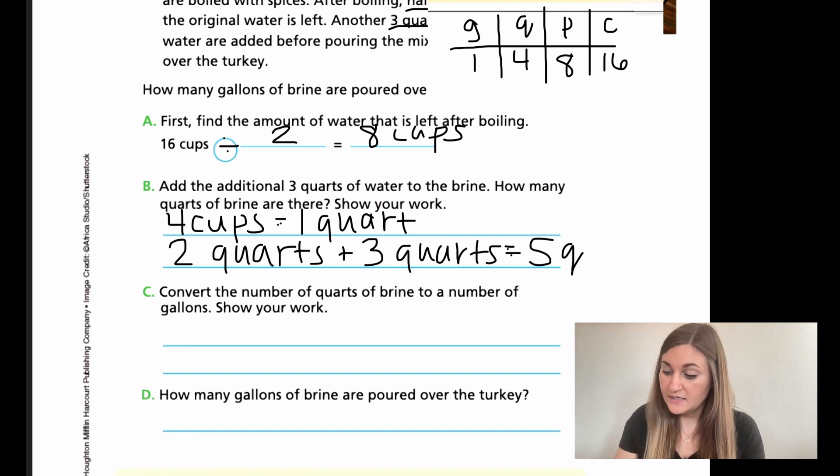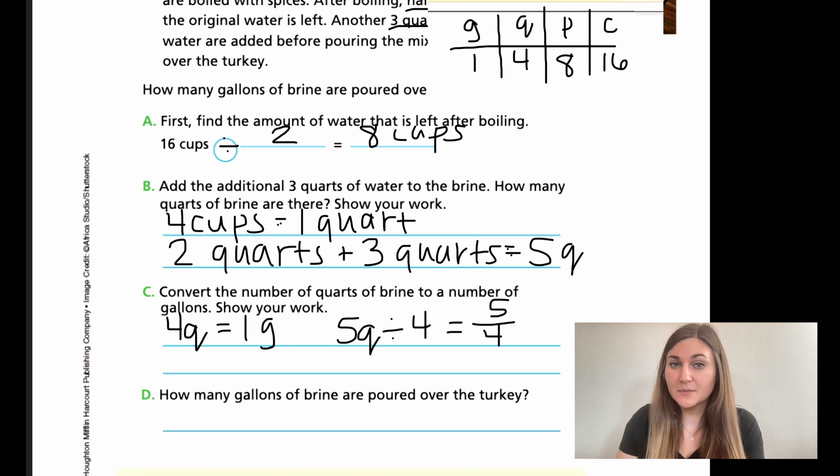For C, it said, convert the number of quarts of brine to a number of gallons. So now I'm going quarts to gallons. So from the Q to the G, I know that there's four quarts in one gallon. So let me just write that down for myself. Four quarts equals one gallon. And I know that I have five quarts. So it's not going to be a perfect whole number conversion and that's okay. So I need to figure out what five quarts divided by four is going to be. I can also just turn this into a fraction because remember fractions technically are division problems. So if I wrote five divided by four that way, now it's a little bit easier to see, right? Because we already know fractions. Five divided by four. If I were going to make this a mixed number, it would be one and one fourth. Or if you wanted to make a decimal be 1.25. So I know I would have one and one fourth gallons.